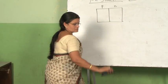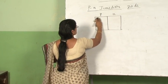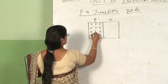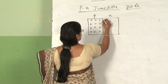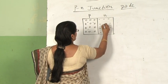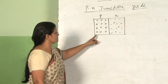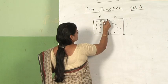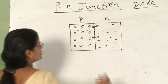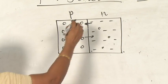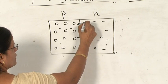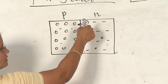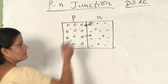When the junction is formed, holes are the majority carriers on the P-side and electrons are the minority carriers, while on the N-side electrons are the majority carriers and holes are the minority carriers. Due to this difference in concentration, diffusion of charge carriers occurs across the junction — electrons diffuse into the P-region and holes diffuse into the N-region. As electrons leave the N-region, they leave behind positively charged ions in the crystal lattice.